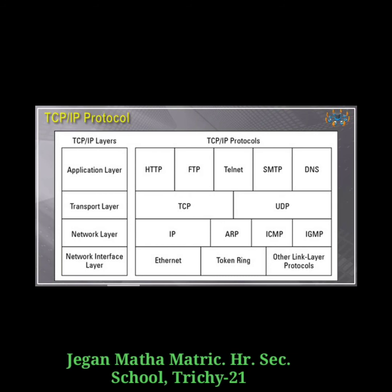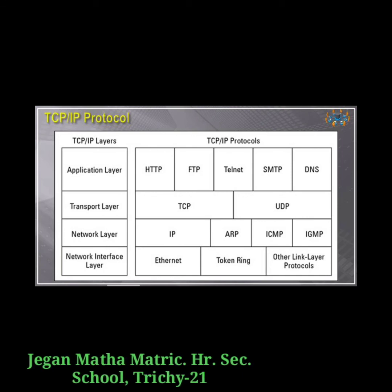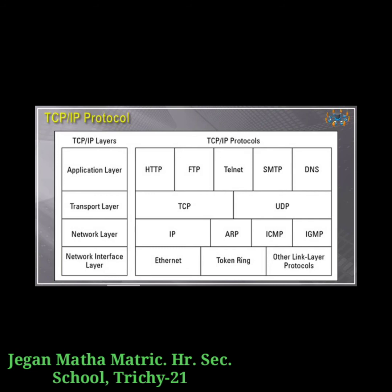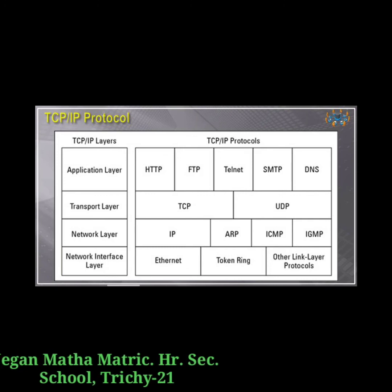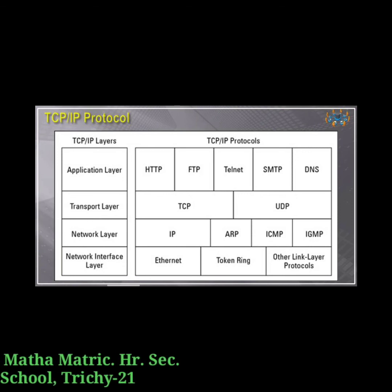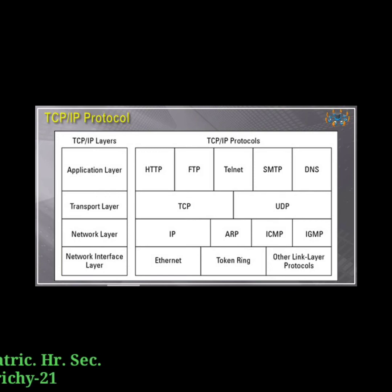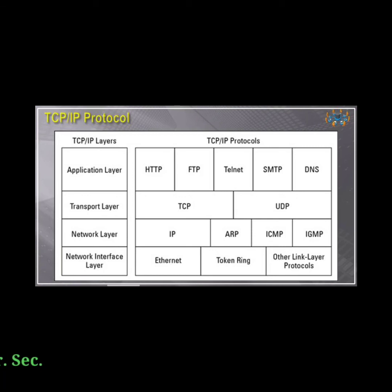The application layer of the TCP/IP model is similar to the session, presentation, and application layers of the OSI reference model. The most popular application layer protocols are: HTTP — the core protocol of the World Wide Web; FTP — which enables the client to send and receive complete files from a server; Telnet — which connects to another computer on the internet; SMTP — which provides email service; and DNS — Domain Name System — which refers to host computers by names rather than numbers. These are all the TCP/IP protocols. Thank you, students.